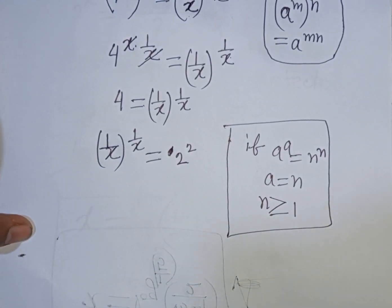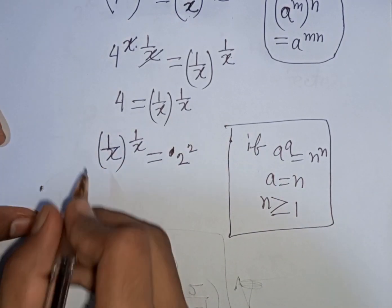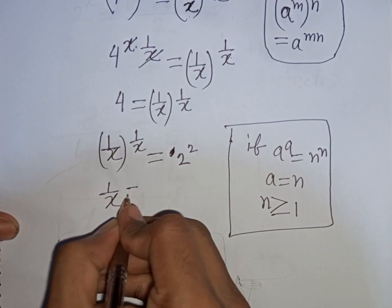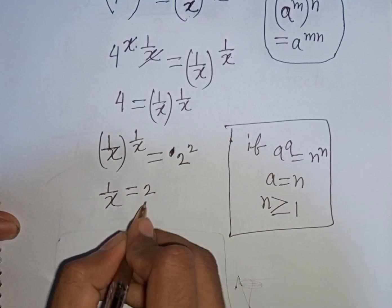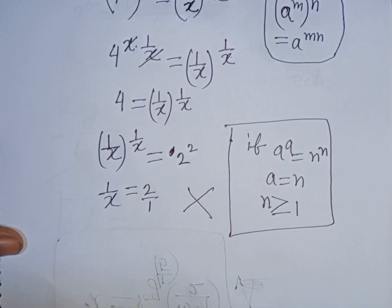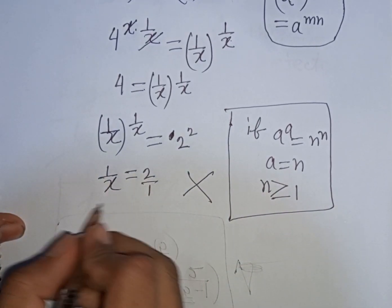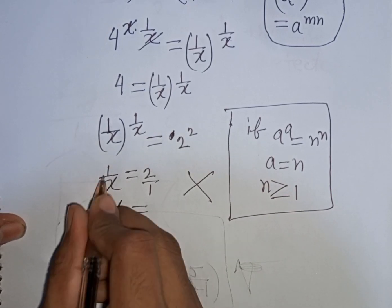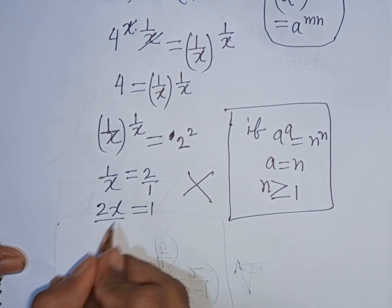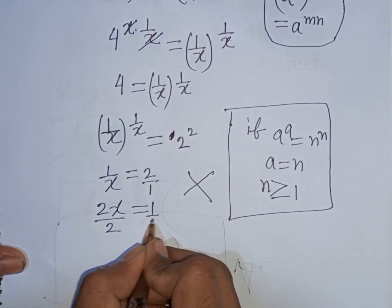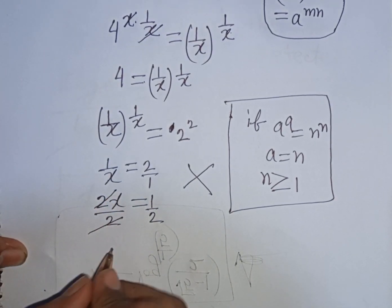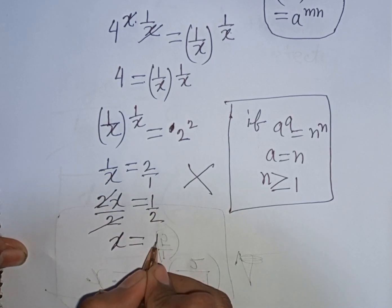So according to this rule, we can compare here 1/x will be equal to 2, and this 2 is same as 2/1. Now here you can apply cross multiply, so I can write here x × 2, that means 2x = 1 × 1, that means 1. Now we need the value of x, so divide by 2 in both sides. Now we see this 2, this 2 will be cancelled, so here x = 1/2.